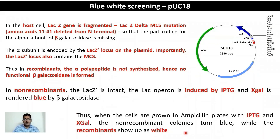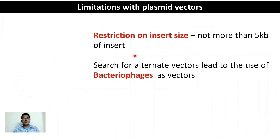When cells are grown on ampicillin plates with IPTG and X-gal, non-recombinants turn up blue because functional beta-galactosidase is synthesized, while recombinants appear white because X-gal is not converted in the absence of functional beta-galactosidase. While blue-white screening solved the problem of one-step selection, the other major limitation of plasmids remains — the maximum insert size is around 5 to 6 kb, and many experimental objectives require larger inserts.